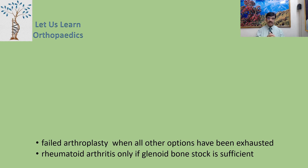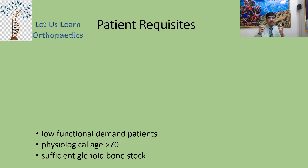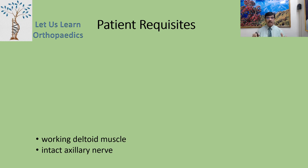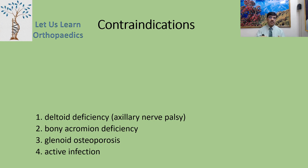Patient prerequisites for reverse shoulder arthroplasty include: low functional demand, physiological age greater than 70, sufficient glenoid bone stock, functioning deltoid muscle, and intact axillary nerve. Contraindications therefore include: deltoid deficiency due to axillary nerve palsy, bony acromion deficiency, glenoid osteoporosis, and the presence of active infection.